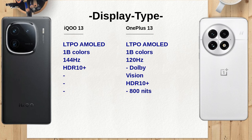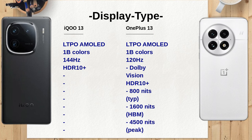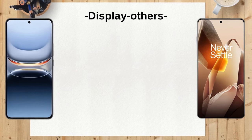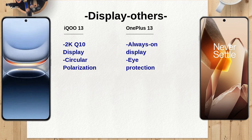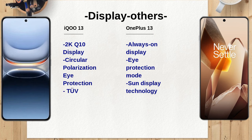Both smartphones run on Android 15, with the iQO13 utilizing Origin OS 5 for the Chinese market, while the OnePlus 13 features Oxygen OS 15 for international users. This difference could affect user experience depending on regional software optimizations. The iQO13 features an LTPO AMOLED display with a 144Hz refresh rate, while the OnePlus 13 also has an LTPO AMOLED display but at 120Hz.